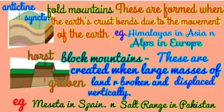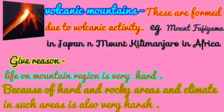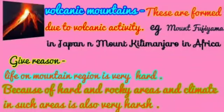You can see the distinct blocks in block mountains — that is why they are called block mountains. They are created when large masses of land are broken and displaced vertically. The third type is volcanic mountains, which are formed due to volcanic activity. Examples include Mount Kilimanjaro in Africa and Mount Fuji in Japan.